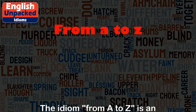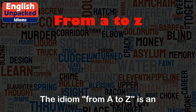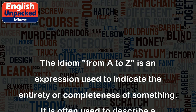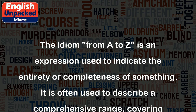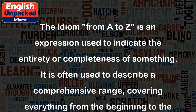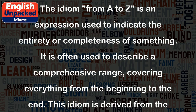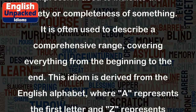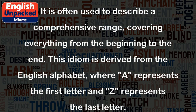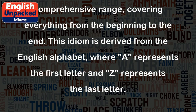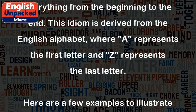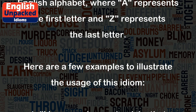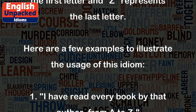From A to Z. The idiom 'from A to Z' is an expression used to indicate the entirety or completeness of something. It is often used to describe a comprehensive range, covering everything from the beginning to the end. This idiom is derived from the English alphabet, where A represents the first letter and Z represents the last letter.